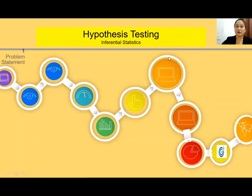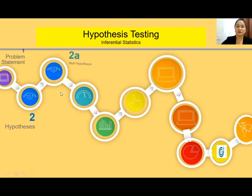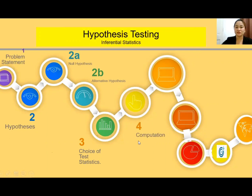There are actually nine steps in hypothesis testing, so that you can understand the steps you are going to undergo when you select only a sample. First, we have the problem statement. Second, the hypothesis — which has two types: the null and the alternative. Third, the choice of test statistics. Fourth, computation. Fifth, decision rule, critical value, and findings.